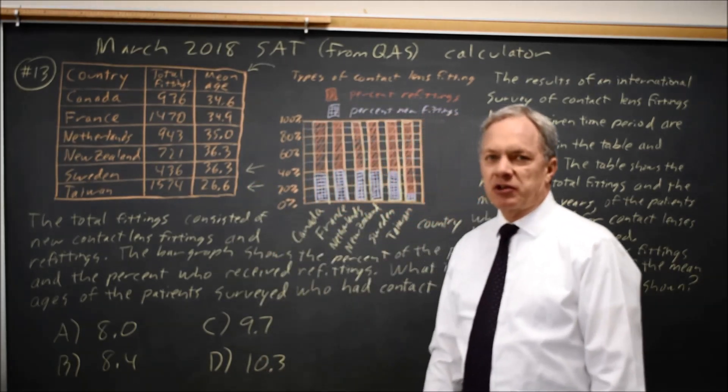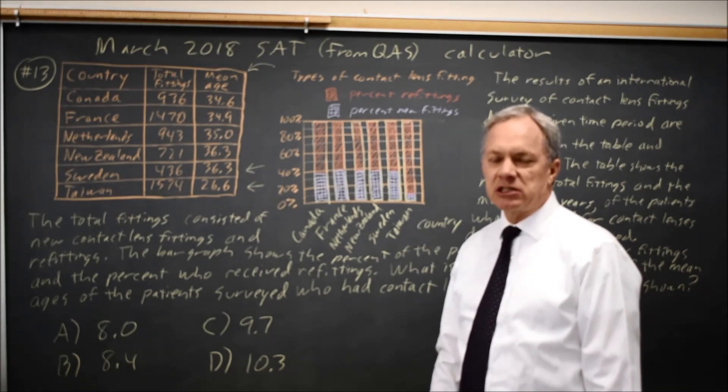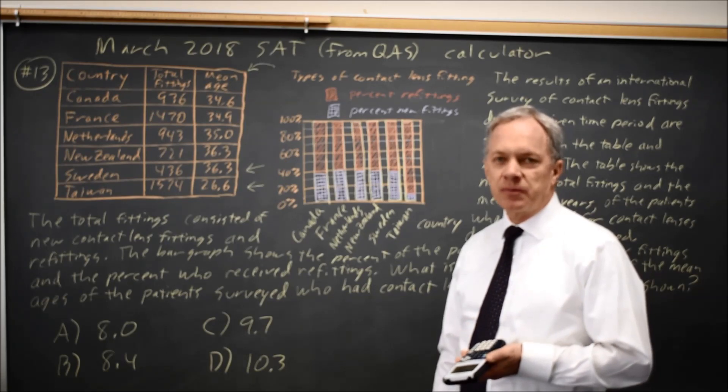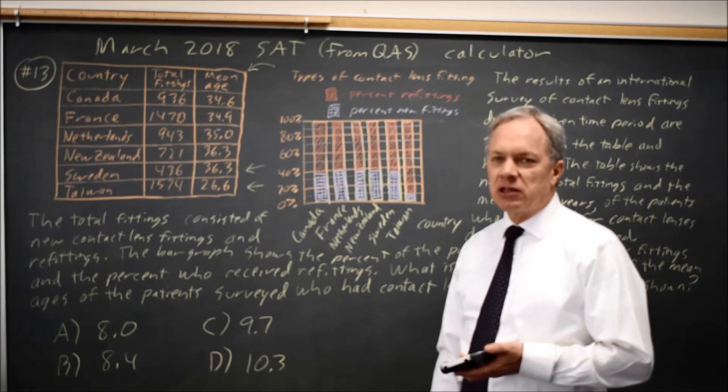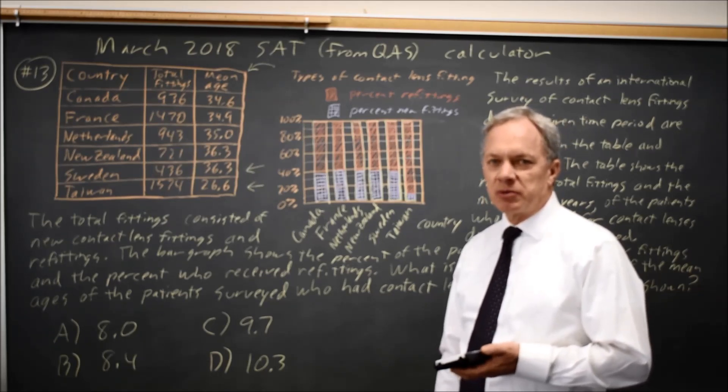If it's a long list and you're having trouble keeping track, you can enter the numbers into the lists under stat edit in your TI-83-84 and have the TI either sort the list or find the mean, median, max, and min using one variable statistics.